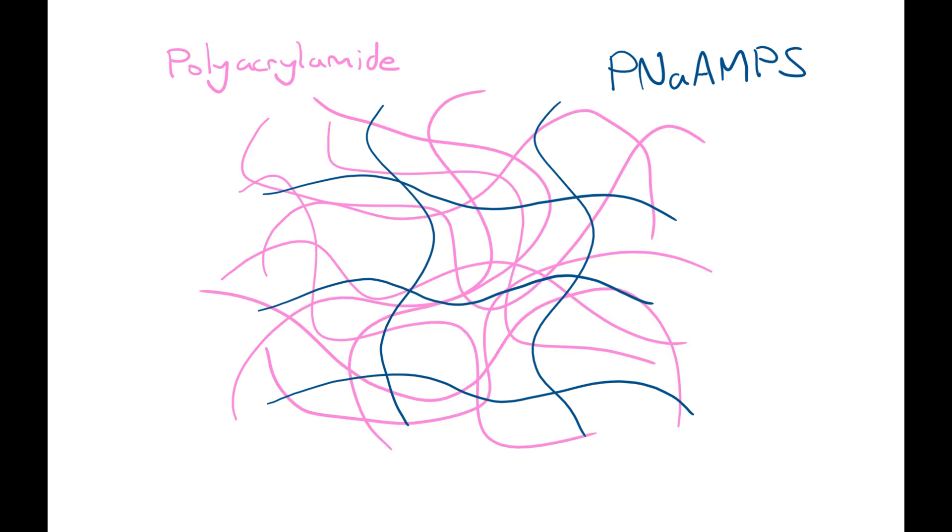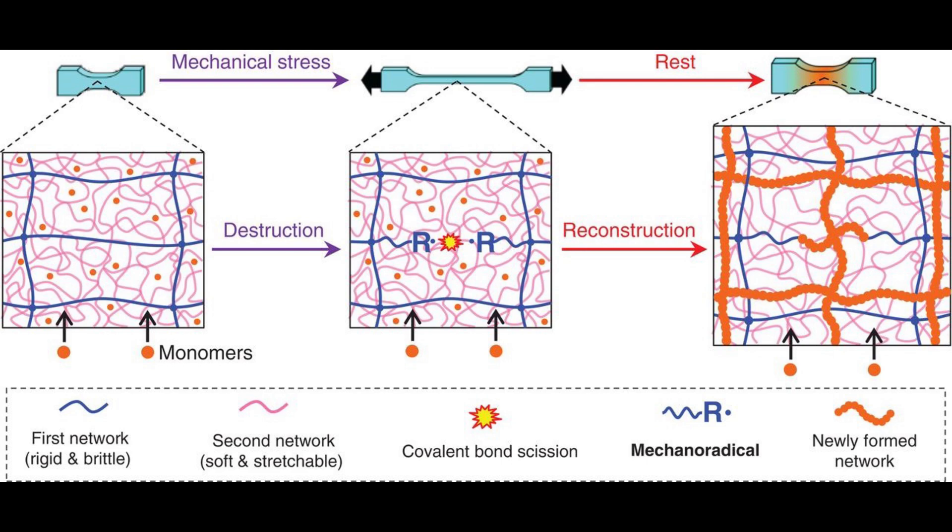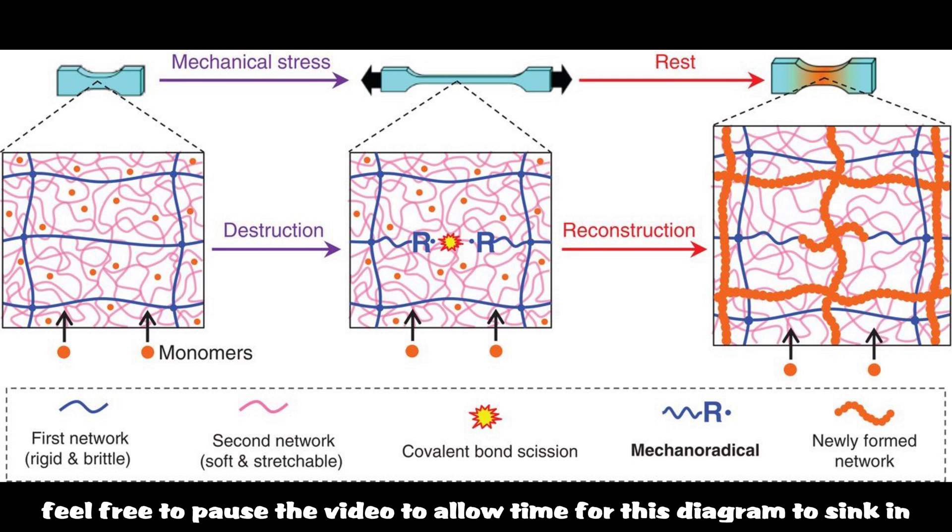The polyacrylamide forms an elastic framework, and the PAMPS forms a rigid brittle network throughout. When mechanical stress is applied to the gel, the elastic network can stretch whilst retaining stability, whereas the brittle network breaks apart to form reactive mechanoradicals, which are simply radicals formed by homolytic bond breakage due to mechanical stress.